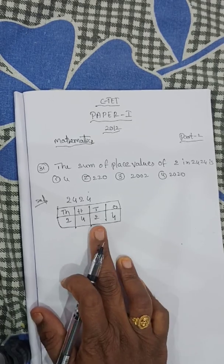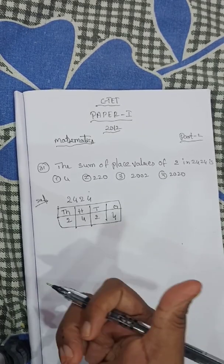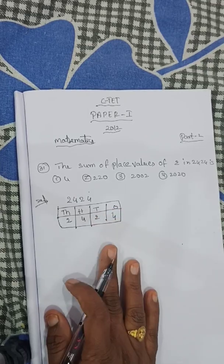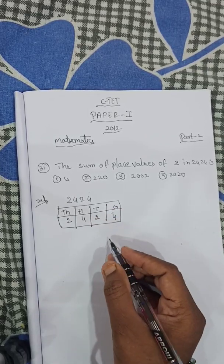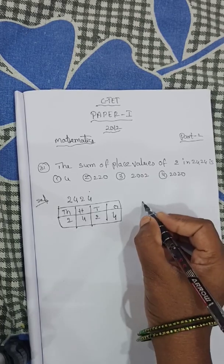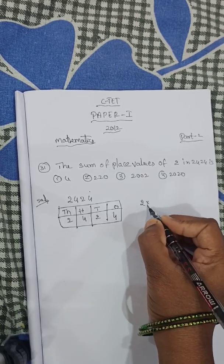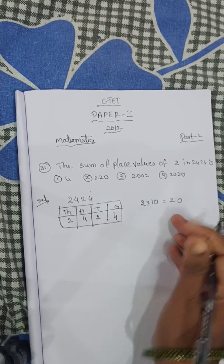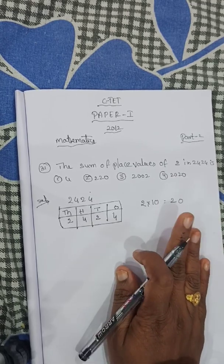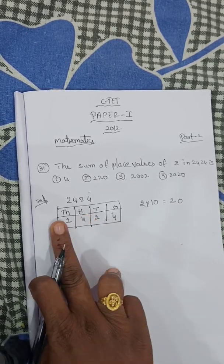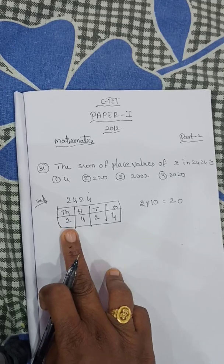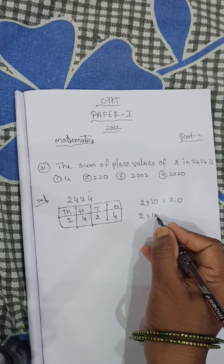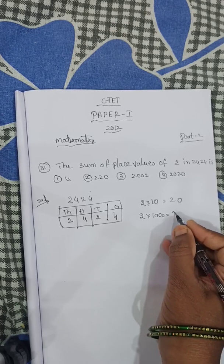Now, the first 2 is in which place? 10's place. So 2 multiplied by 10 equals 20. The next 2 is in the 1000's place. So 2 multiplied by 1000 equals 2000.